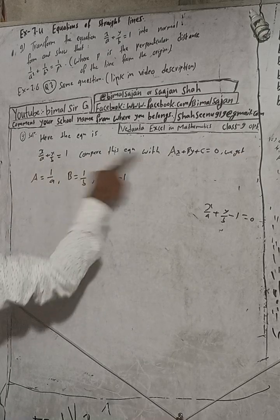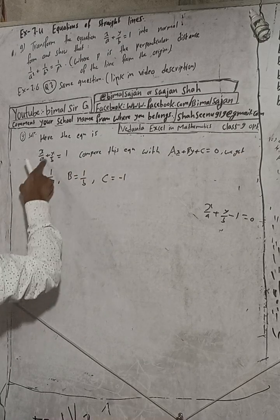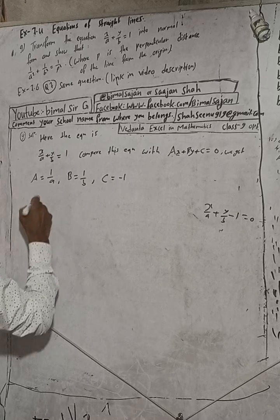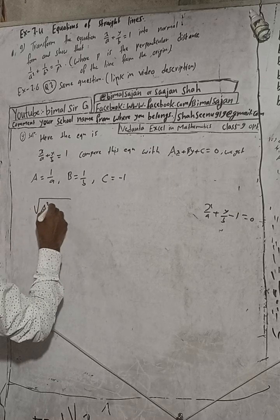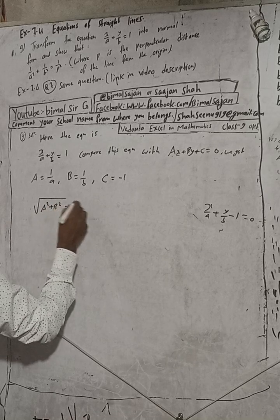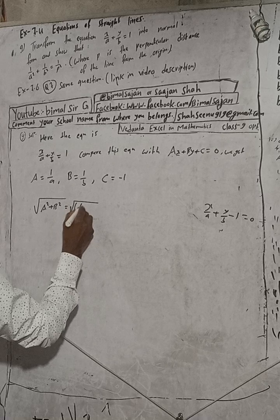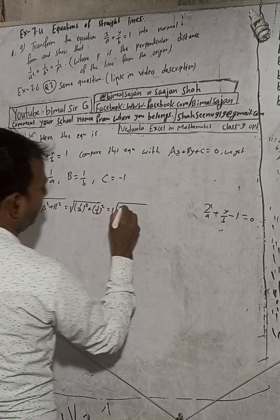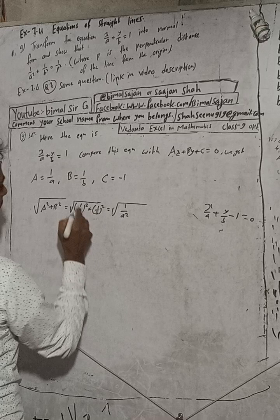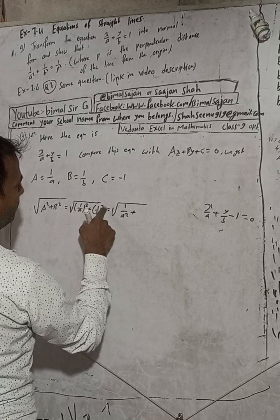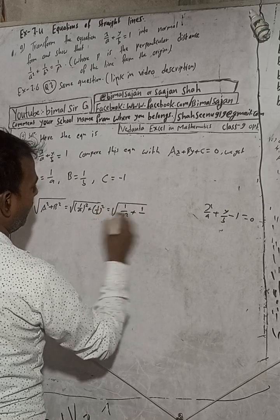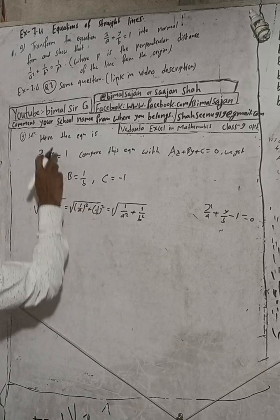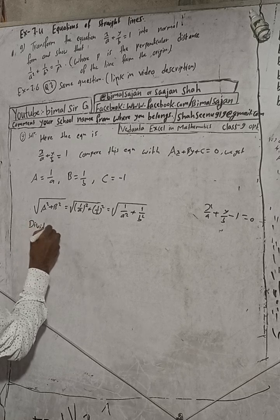After comparing this equation with the standard form, we get: a is equal to 1/a, b is equal to 1/b, and c is equal to minus 1. Now I will find the root of a² + b², which can be written as √(1/a² + 1/b²).